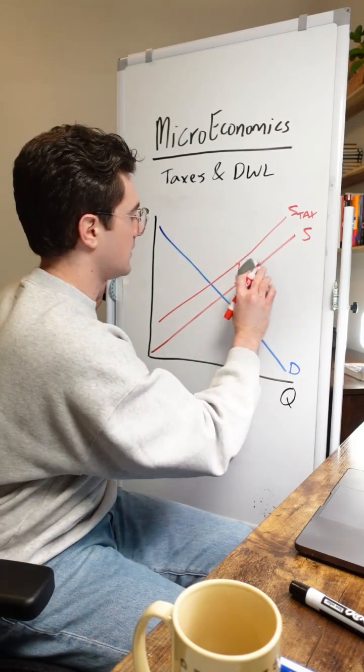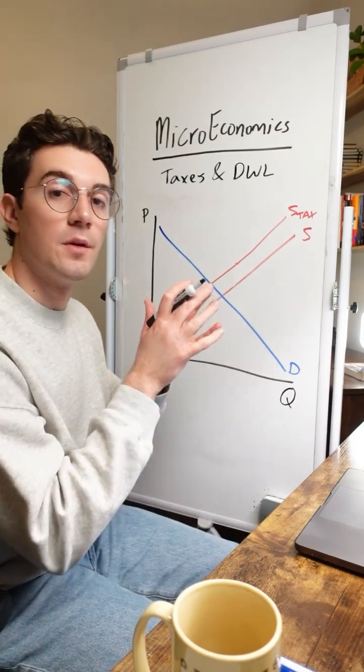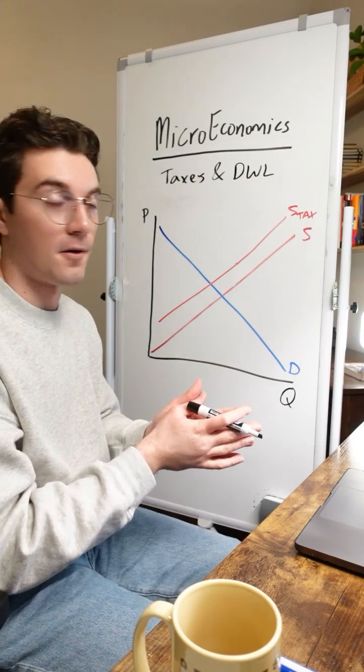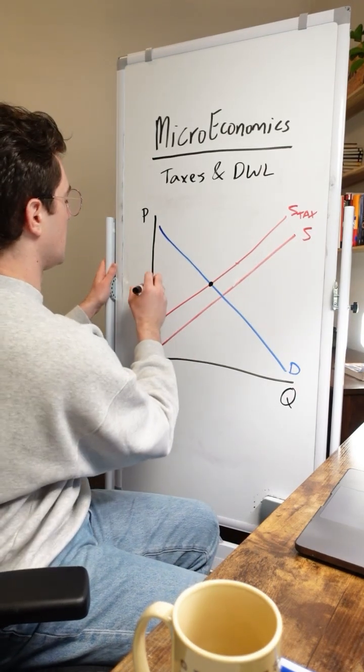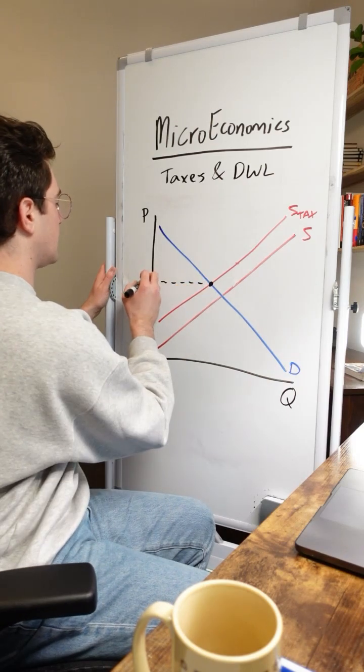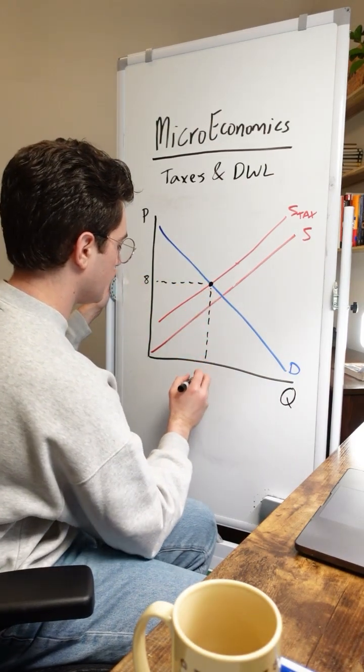All right, with that said, I'm going to erase this part right here. What we need to understand from here is the point that this market operates at now. Look at the supply plus tax and demand curves. The market's going to operate right here at a price of let's just say $8 and a quantity of nine units to find the tax revenue rectangle.